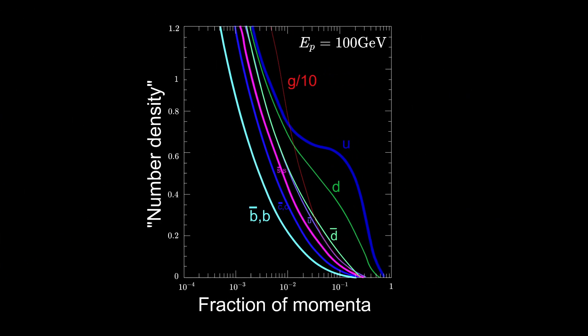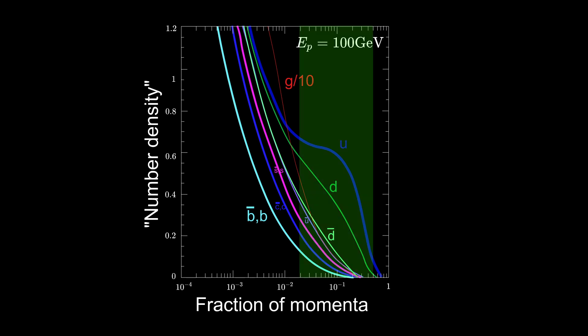If we increase the total 4-momenta of the proton then these peaks start to disappear which means that the valence quarks play less and less dominant role over other partons.